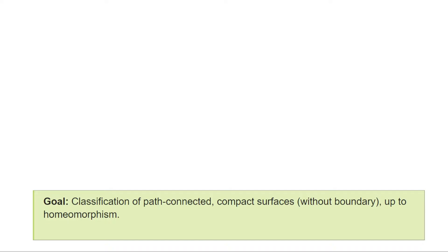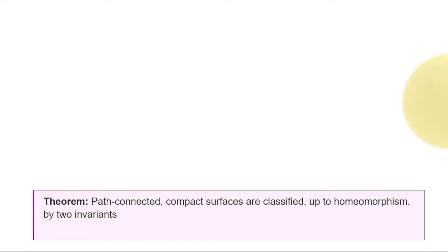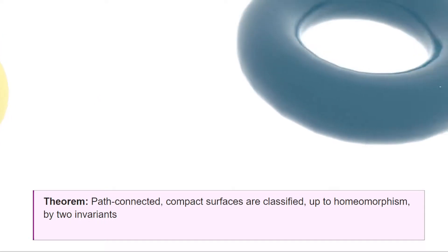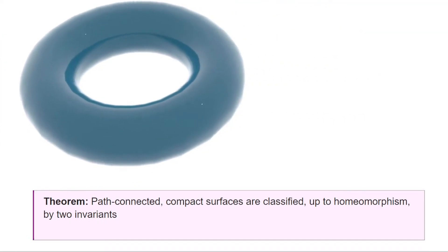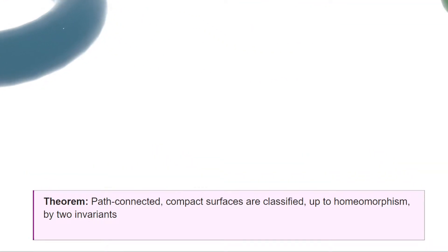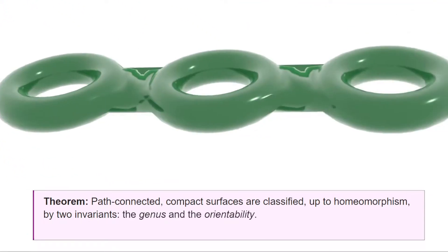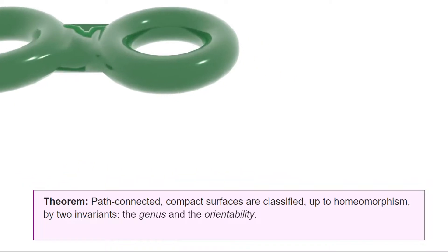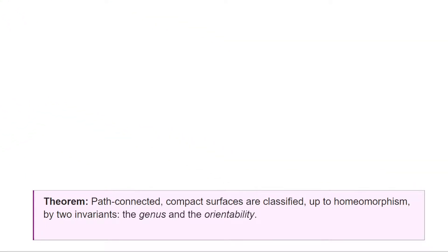The statement we want to prove reads as follows: compact and path-connected surfaces are classified by two invariants, which are the genus and the orientability. The genus is a numerical invariant you are probably already familiar with — it basically corresponds to the number of holes that the surface has.